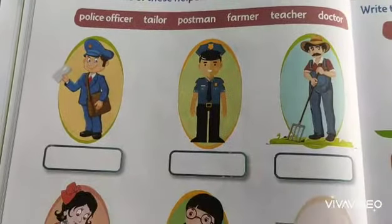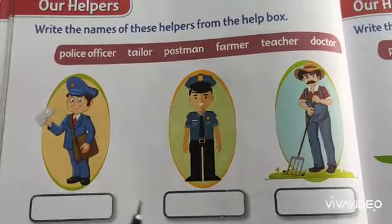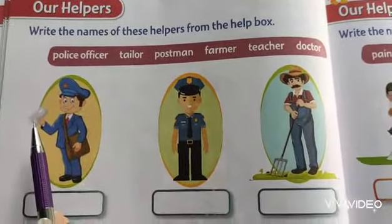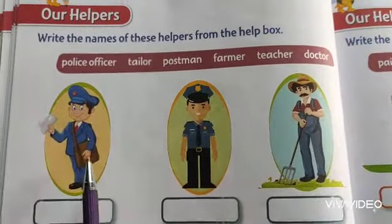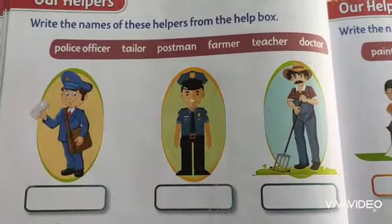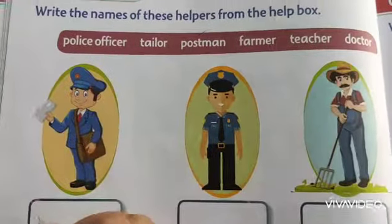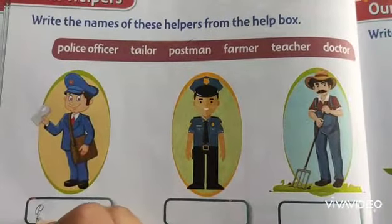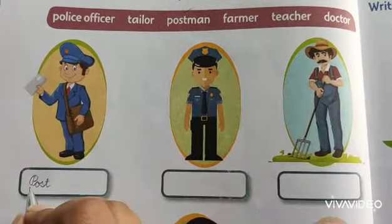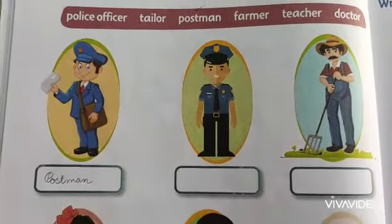Look at the first picture and identify who he is. He holds one envelope and carries one bag — there should be a postcard. That means he is a postman. Tick here and write postman. The first letter should always be capital. So write capital P-O-S-T-M-A-N. Postman.